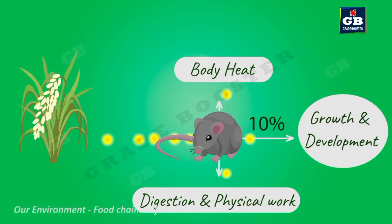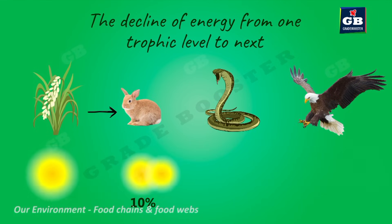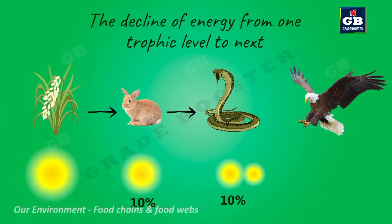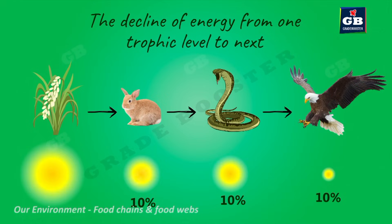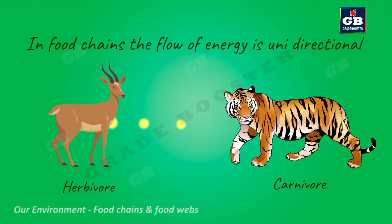The rest is spent for various activities. So in a food chain, only 10% of the energy from level 1 is available for level 2, only 10% from level 2 is available for level 3, and only 10% from level 3 is available for level 4. We can observe a gradual decline of energy from the first to the last level. That is why food chains usually have only three to four levels.